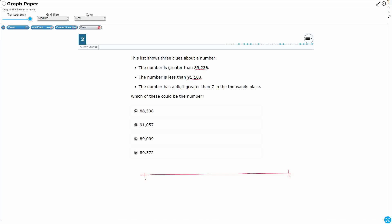So 89,236, right? It's greater than this, so it's going to be larger than this. It's going to be less than 91,103. It's going to be less than that. All right, so I'm going to draw a number line here. So our answer has to fall in between these.